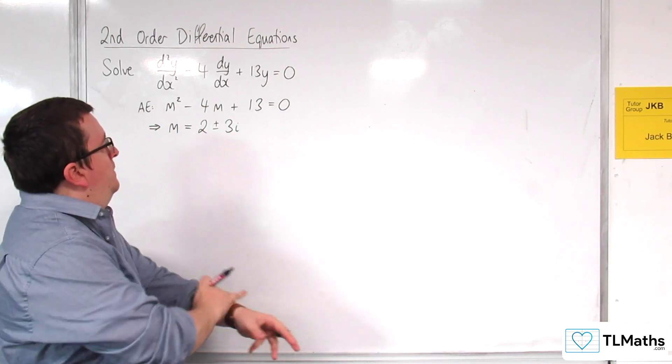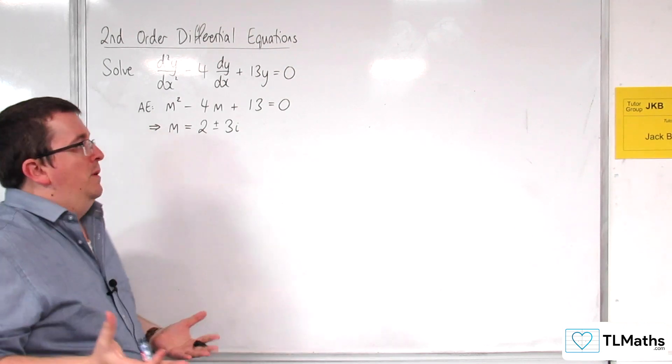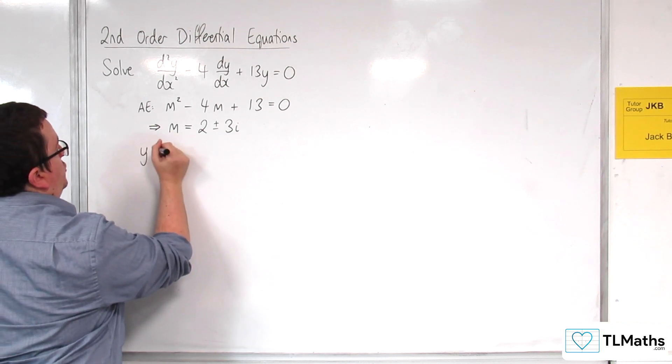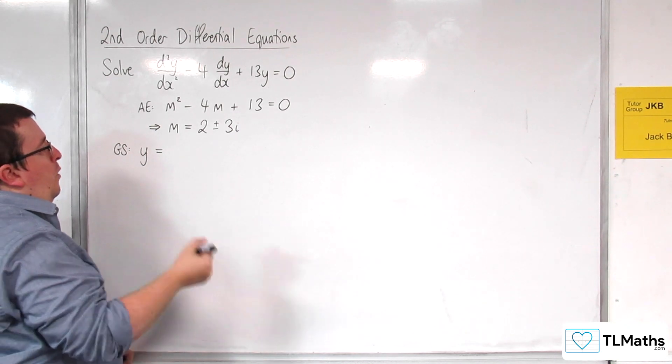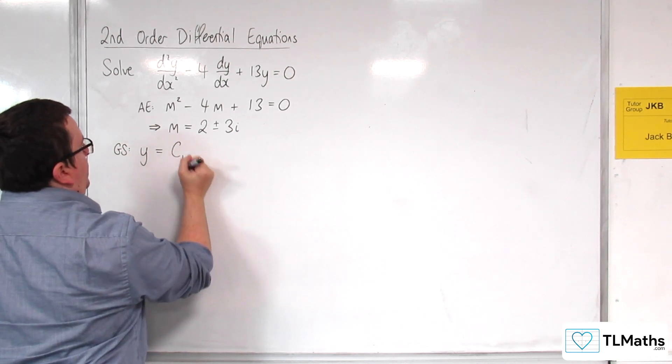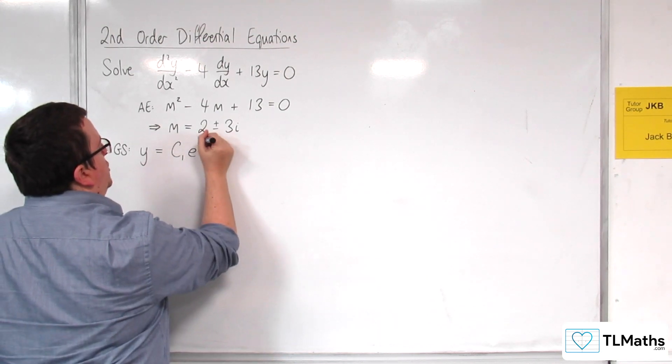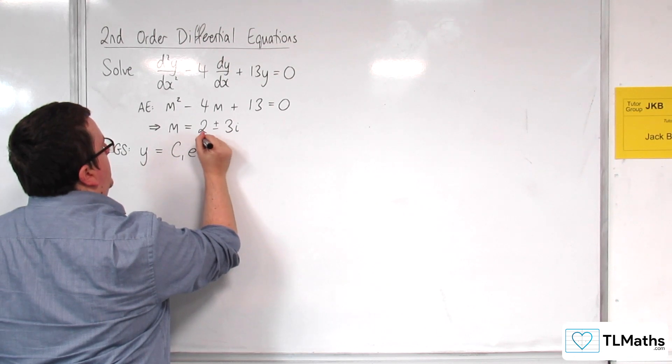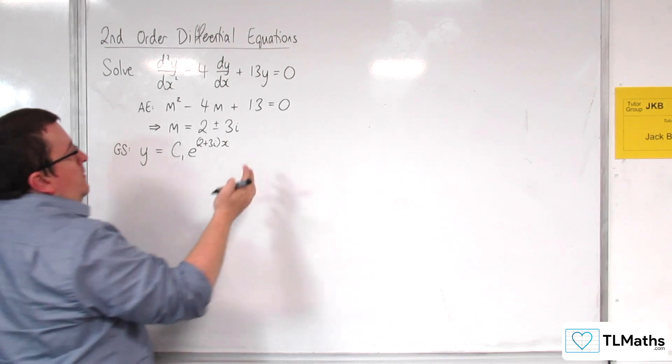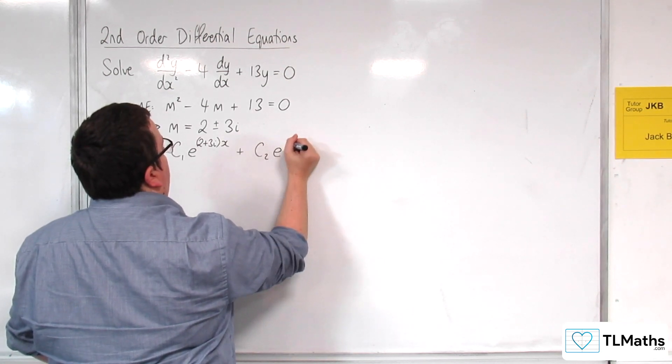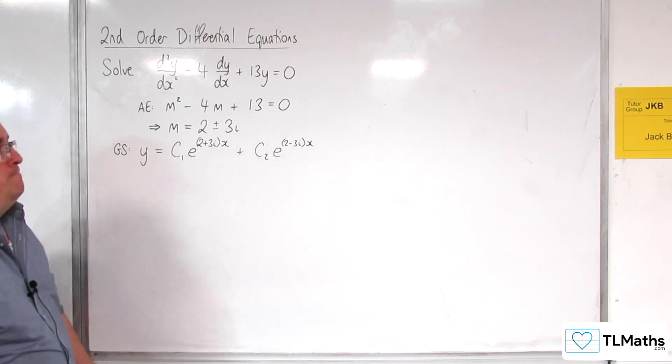Right, so next, because of what we've seen up to this point, we might assume that the solutions, or the general solution rather, to the differential equation would be of the form y equals some constant c1 times e to the power of one of these roots. So 2 plus 3i times by x, then plus some constant e to the power of 2 minus 3ix.